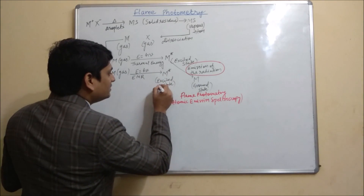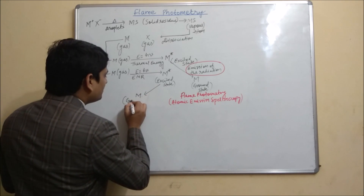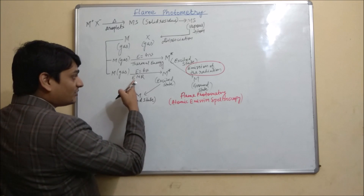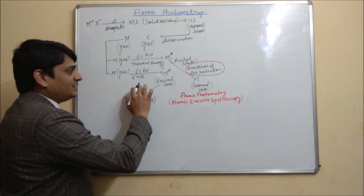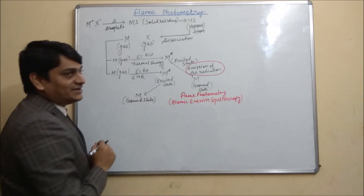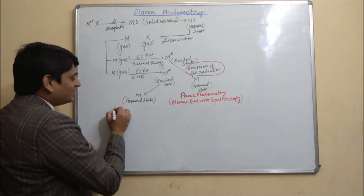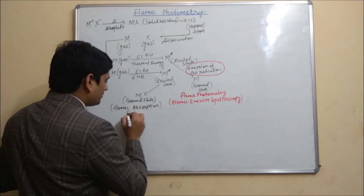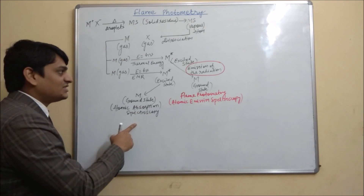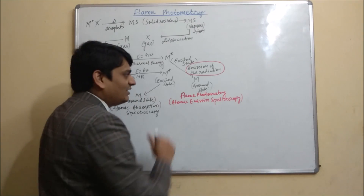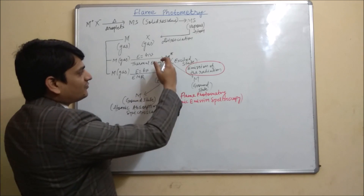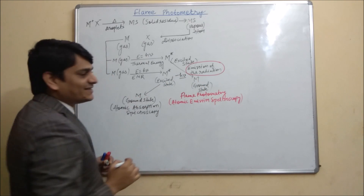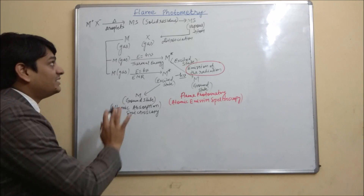From the excited state M*, the atom comes to the ground state. When it gets electromagnetic radiation and goes to the excited state and then comes back, that method is known as atomic absorption spectroscopy. In atomic absorption spectroscopy, absorption is measured, but here in flame photometry, emission is measured. From excited state coming to ground state, the atom releases energy of hν, so it is minus hν.